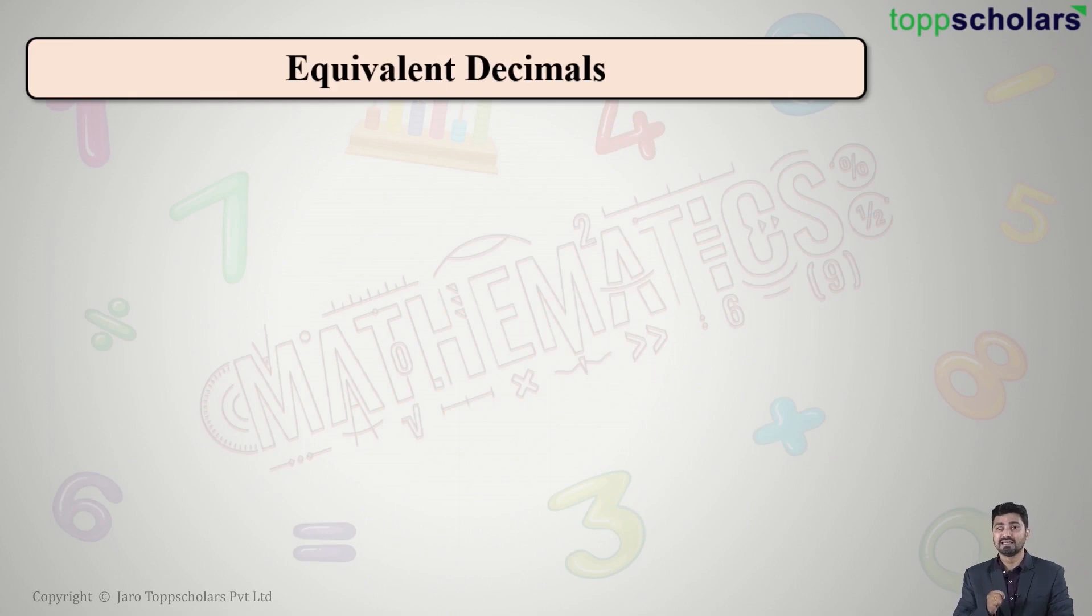Now let us understand how to recognize equivalent decimals. Before that, we have learned that 0.1 is equal to 0.10 is equal to 0.100 is equal to 0.1000 and so on. So we see here that the zeros on the extreme end have no value.